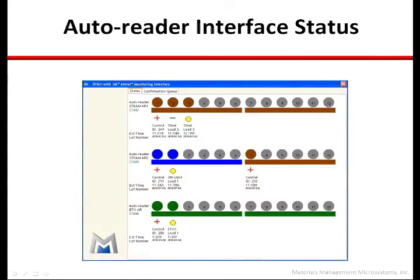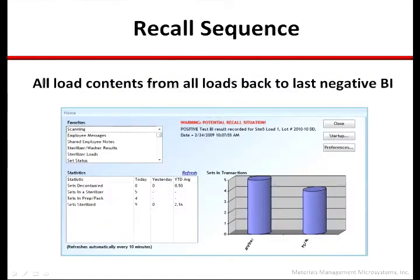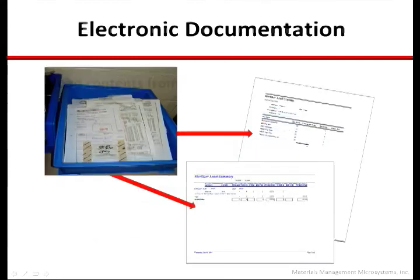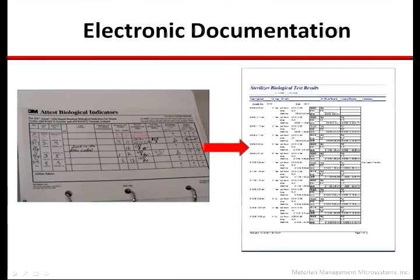This is an at-a-glance status screen for the auto-reader interface. It shows all auto-readers in use — in this case three different ones — what products are running: brown caps, blue caps, or green cap BIs; whether they are test or control BIs; the sterilizer and load number information; and the time when the final read will be available for confirmation. In addition to workstation messaging, this desktop alert overrides all activity on the manager home screen so critical recall information is provided and available real time. In addition to moving to a paperless environment for all record keeping, this data is now useful for reporting and decision support.